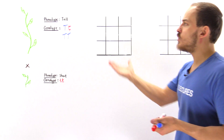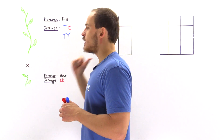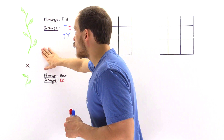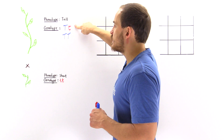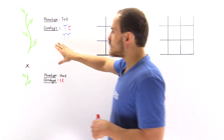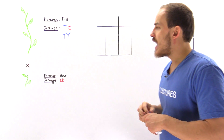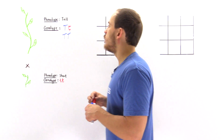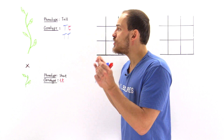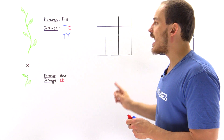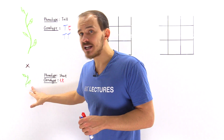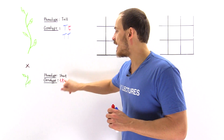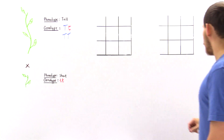We still don't know exactly which one it is. If we take this plant with the unknown genotype and cross it with a plant whose genotype we actually know, we can figure this out. The only type of plant whose genotype we know for certain is a homozygous recessive — a short plant — because the only time a plant will be short is if its genotype is lowercase t, lowercase t.